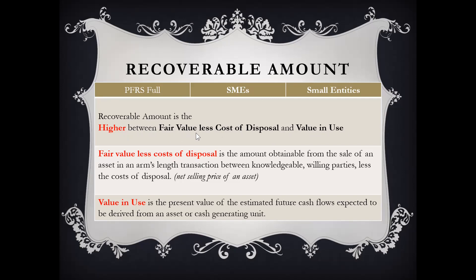The fair value less cost of disposal is the amount obtainable from the sale of an asset in an arm's length transaction between knowledgeable, willing parties, less the cost of disposal — in other words, the net selling price of the asset. The value in use is the present value of the estimated future cash flows expected to be derived from an asset or the cash generating unit, which is a group of assets that can generate cash for the entity.